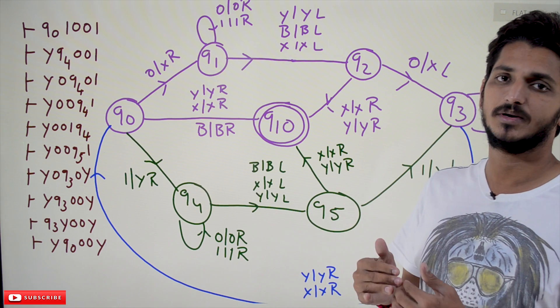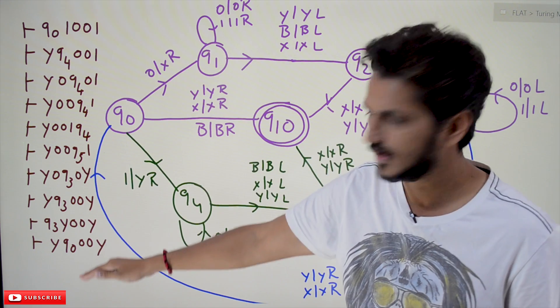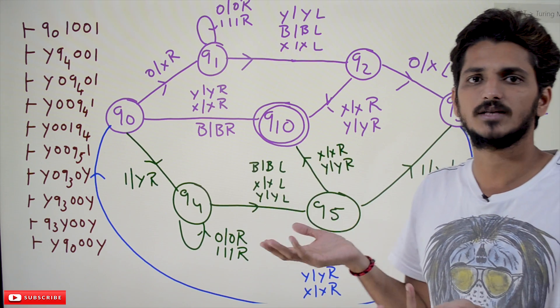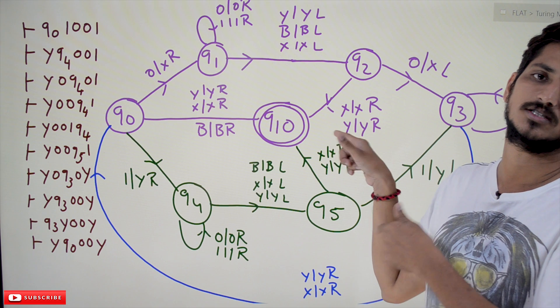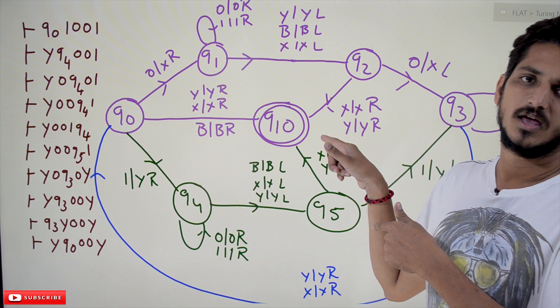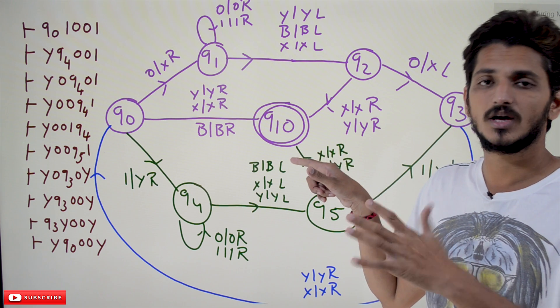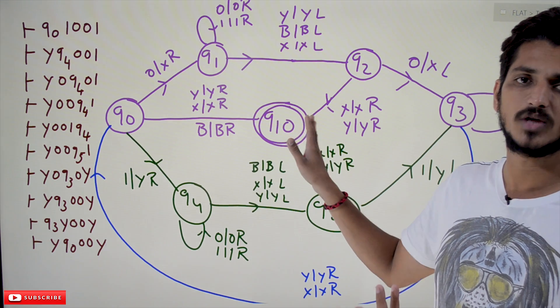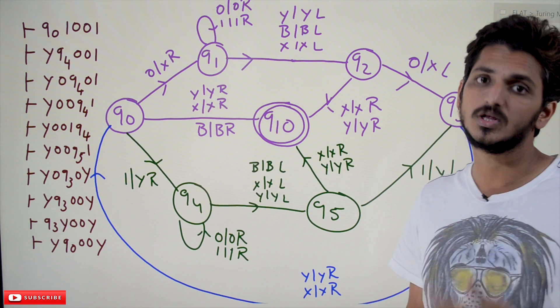Step by step. At the end, if it is going to end at Q10 state, it is accepted because it is a halt state. If it stopped in the middle at any other state other than Q10, it is not accepted. That is how we show that.